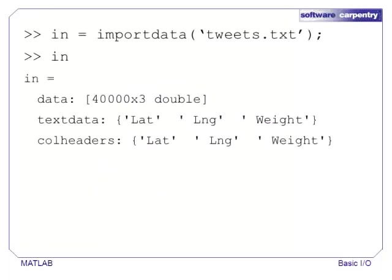Users do not have to remember which function to use in every situation. importdata returns the input as a structure. When we inspect the elements of the structure, we see that the file's information was broken into a large three-column matrix called data, a cell array of strings called headers that are the column headers for each column in our matrix, and a third item called textdata that contains a copy of the column headers. If we had more lines of text at the start of our file, these would have been stored in a nested cell array in textdata.